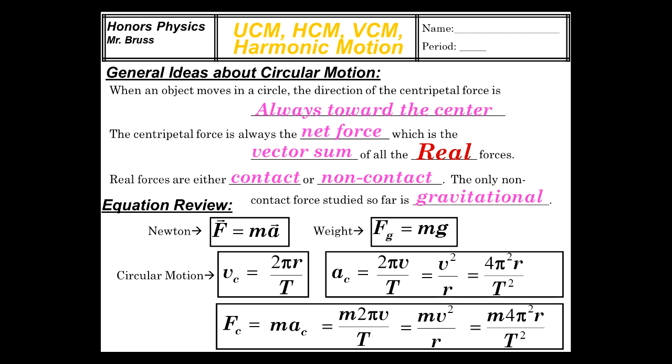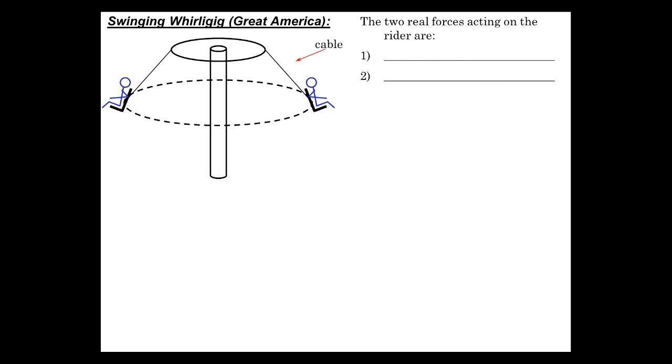We are now going to embark on a little primer on horizontal circular motion, using several examples showing how the forces add up to the centripetal force. So basically, some examples where you're actually moving in a horizontal circle, like we see here on this whirly gig that you might still find at Great America, assuming that that park exists when you're watching this video. It does in 2013, still. Two real forces acting on the rider, well, we're going to look at that. You can visualize what those are, hopefully.